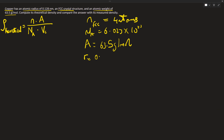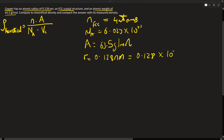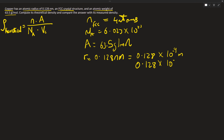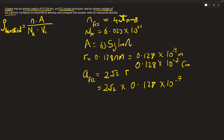Our radius is given as 0.128 nanometers, which equals 0.128 times 10 to the power of minus 9 meters, or equivalently 0.128 times 10 to the power of minus 7 centimeters. For an FCC structure, the lattice parameter 'a' equals 2 root 2 times r, so a equals 2 root 2 times 0.128 times 10 to the power of minus 7 centimeters.